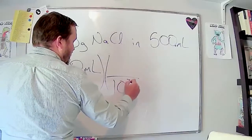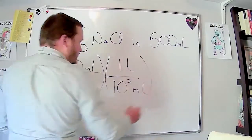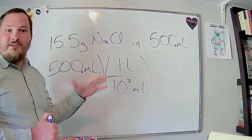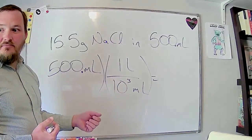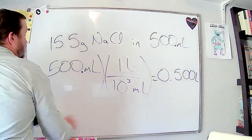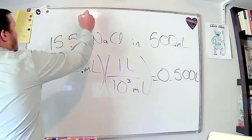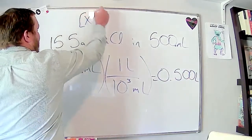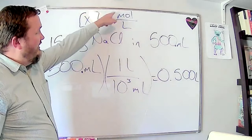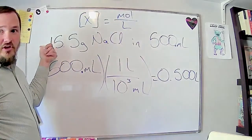500 divided by 1000 gives us 0.500 liters — that's our volume. The concentration of anything is always moles over liters, so we put our liters there. Now we just need to figure out how many moles of sodium chloride we have. We'd reference a periodic table for this — look up sodium and chlorine.